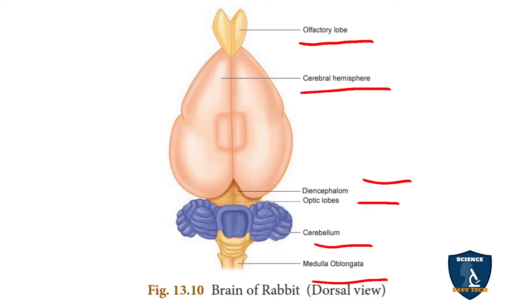The brain is present inside the cranial cavity, which is the skull box. The brain is divided into three regions.